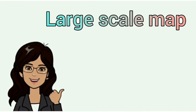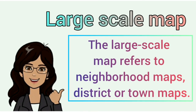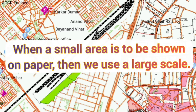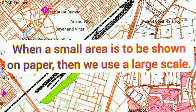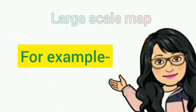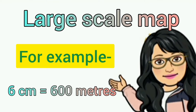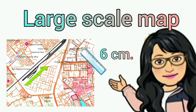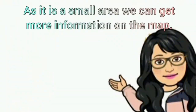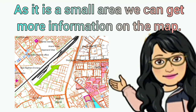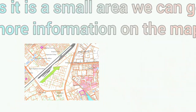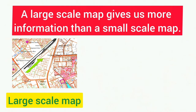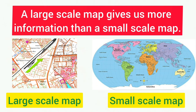The large scale map refers to neighborhood maps, district, or town maps. When a small area is to be shown on paper, we use a large scale — for example, 6 cm equal to 600 meters, meaning 6 cm on the map shows 600 meters on the ground. As it is a small area, we can get more information on the map. Hence, a large scale map gives us more information than a small scale map.